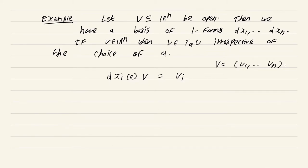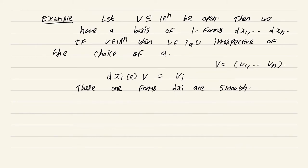Now, these one-forms dx_i are smooth. Even that requires a bit of thought to see why, since even for a single open set there are several ways to parameterize it — you could parameterize it by some function other than the identity. So it is not really clear just from the discussion so far why these forms dx_i are smooth, but this will drop out as an easy consequence of what is to come.